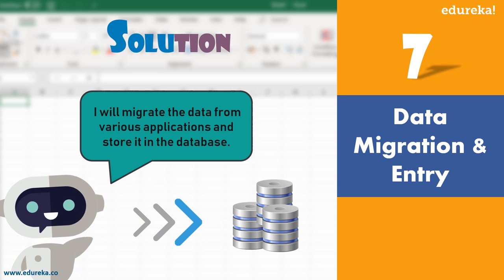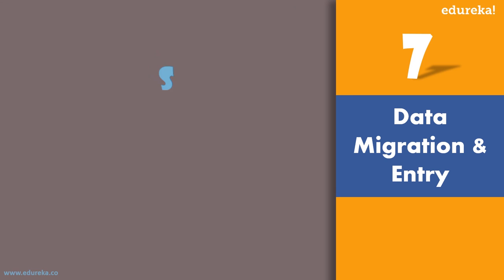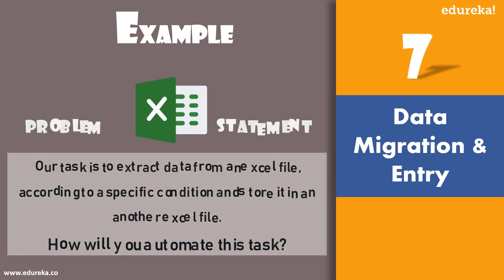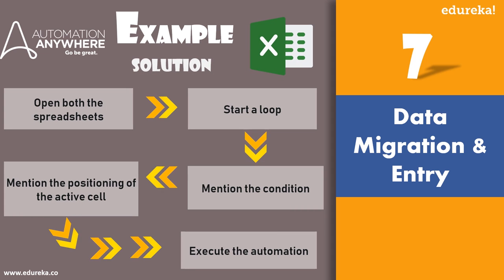I'm going to show how data migration and entry can be done using Automation Anywhere. The scenario: extract data from one Excel file according to specific conditions and store it in another Excel file. The workflow: open the spreadsheets, start a loop mentioning the condition based on which data from the first spreadsheet gets stored in the second, mention the positioning of active cells, then execute the automation.